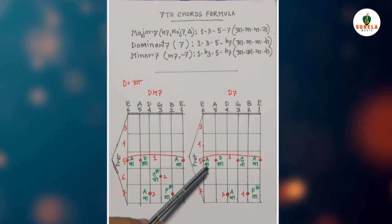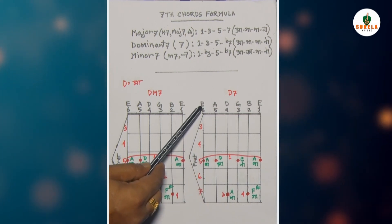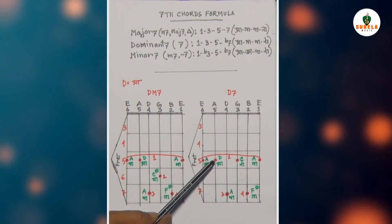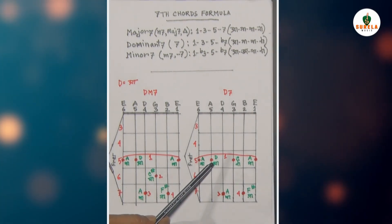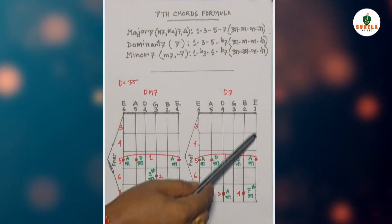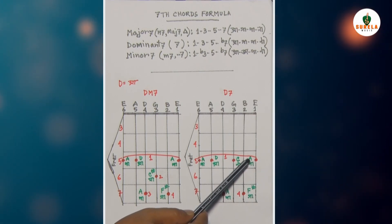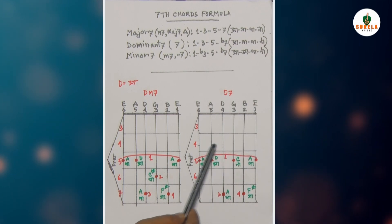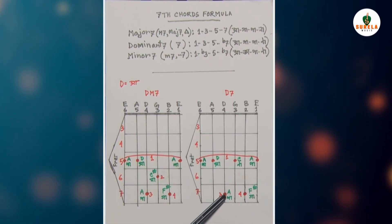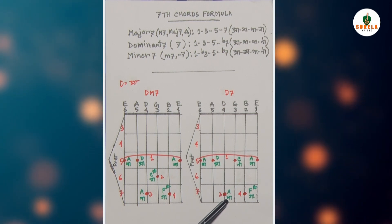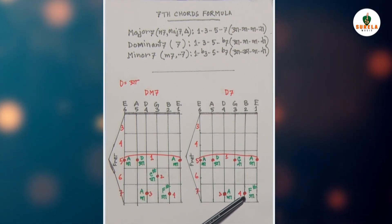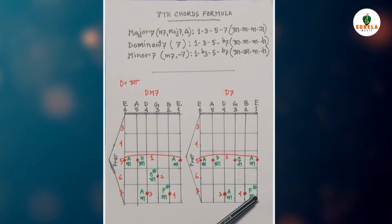Fret count: 3, 4, 5, 6, 7। 6th string, 5th fret — A note, শর হচ্ছে পা। 5th string, 5th fret — note হচ্ছে D, শর হচ্ছে সা। 3rd string, 5th fret — note হচ্ছে C, শর হচ্ছে কমোলি। 1st string, 5th fret — note হচ্ছে A, শর হচ্ছে পা। 4th string, 7th fret, 3rd finger — note হচ্ছে A, শর হচ্ছে পা। 2nd string, 7th fret, 4th finger — note হচ্ছে F, শর হচ্ছে সুধোগা।